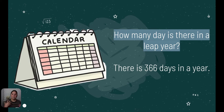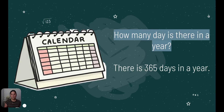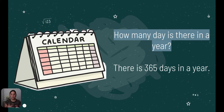How many days are in a leap year? There are 366 days in a leap year, and that extra day is found in the month of February, which then has 29 days. And how many days are in a regular year? In a regular year, there are 365 days, meaning February has only 28 days. Go ahead and take notes on this important information because in our next module, you're going to need these numbers.